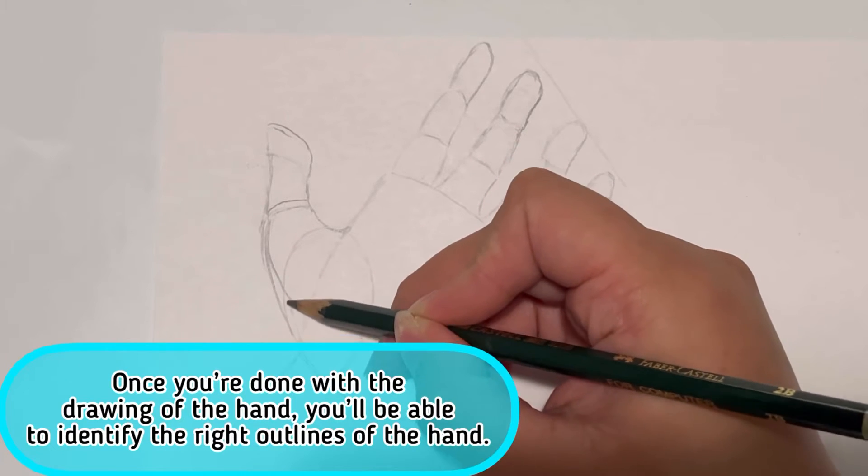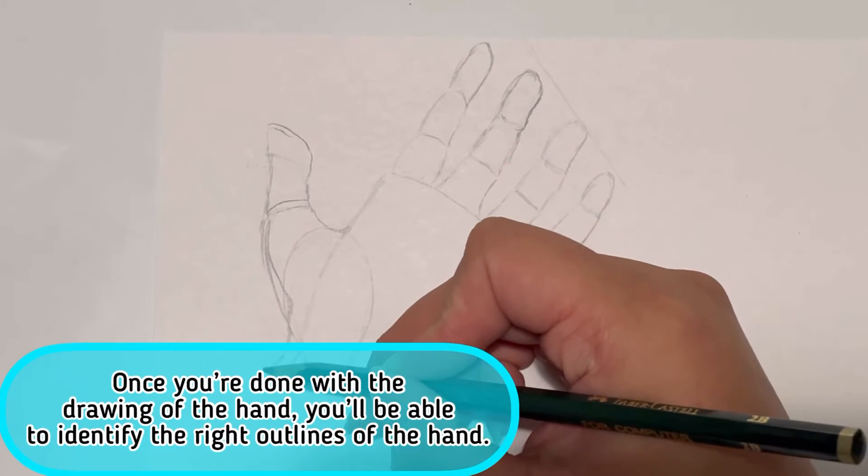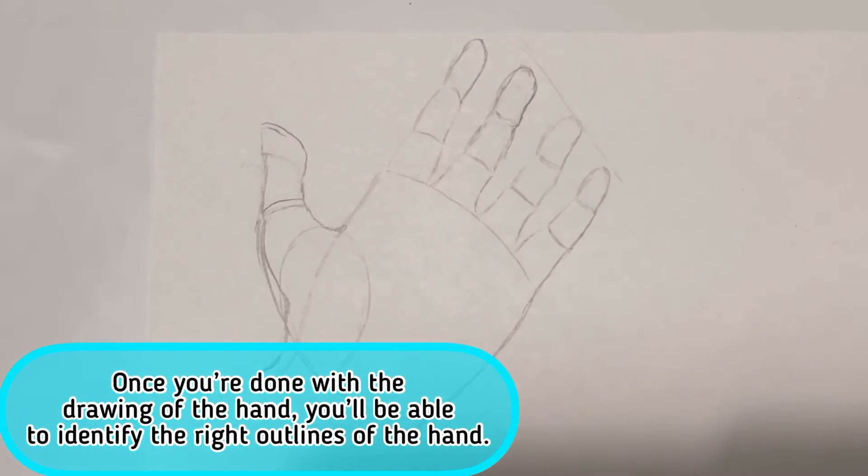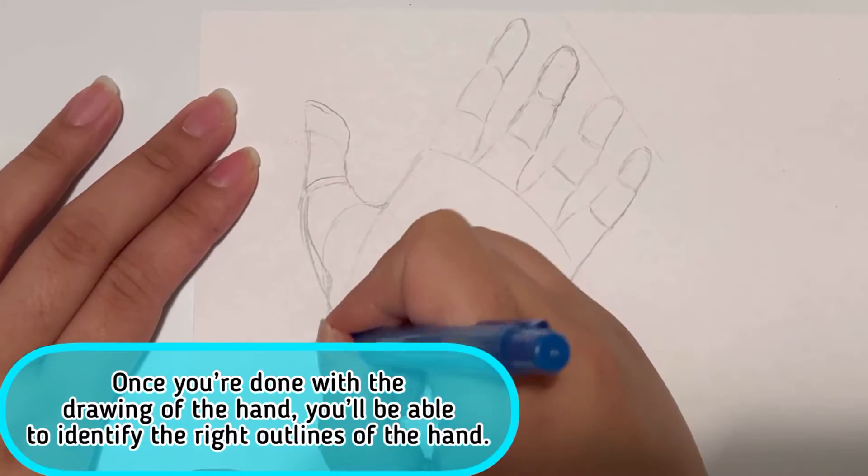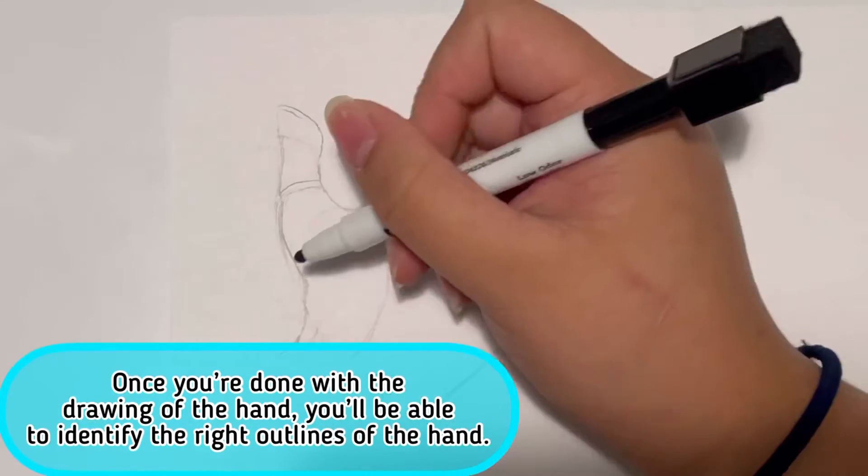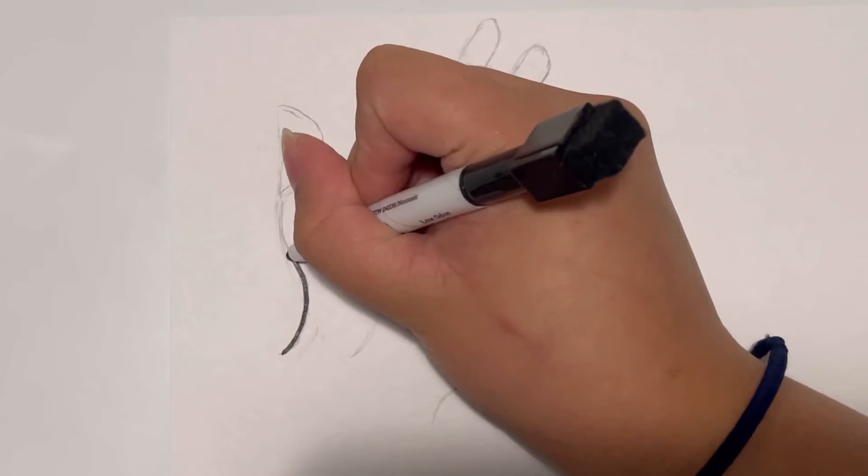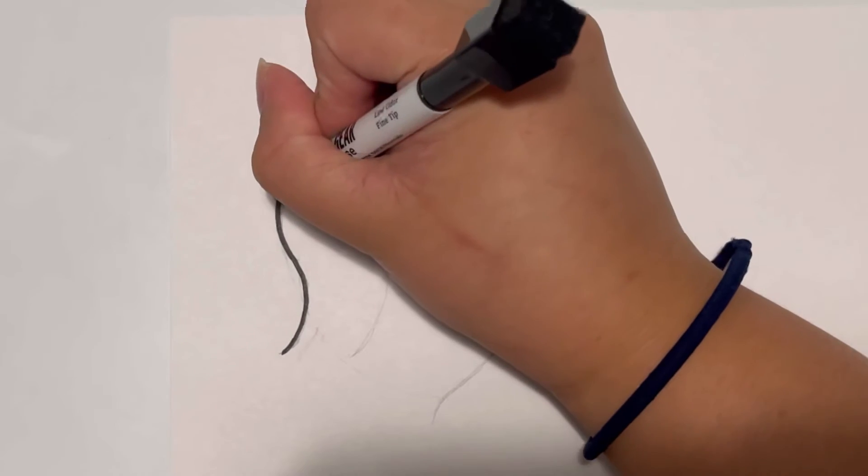Once you're done with the drawing of the hand, you'll be able to identify the right outlines of the hand. So when you're confident with your finishing touches, then that's when you can just do the outline using markers or ball pens.